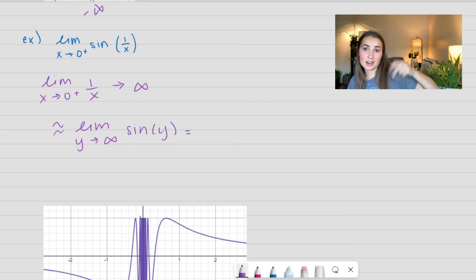Which remember, we said this is oscillating. If you don't remember that, you can go ahead and check out my previous video. I'll link it right here where we talk about oscillating functions. But this limit actually doesn't exist, which tells me my original limit also does not exist.